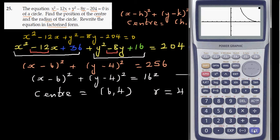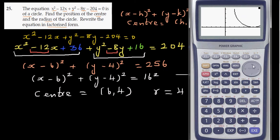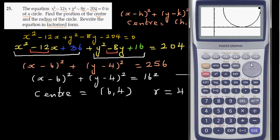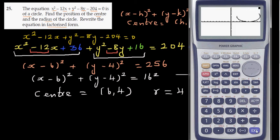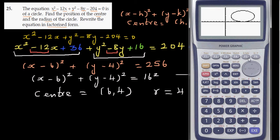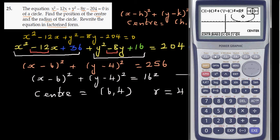Then draw it. You can scroll up to see the whole circle, and scroll down, and you can make this a 10 by 10 view — it may not look perfectly circular, but it is a circle. The calculator confirms: center is 6 comma 4 and radius is 16.